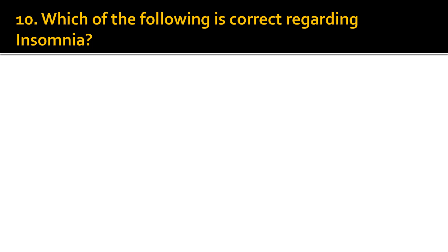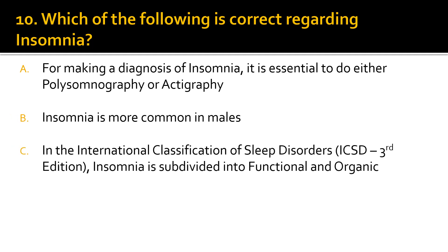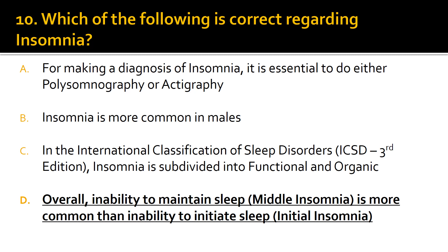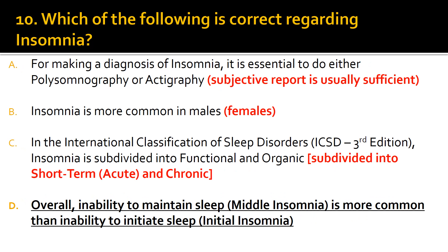Question 10. Which of the following is correct regarding insomnia? The correct answer is D: overall inability to maintain sleep. A is incorrect because a subjective report is usually sufficient for making a diagnosis of insomnia. B is incorrect because insomnia is more common in females. C is incorrect because in the International Classification of Sleep Disorders, third edition, insomnia is subdivided into short-term and chronic.